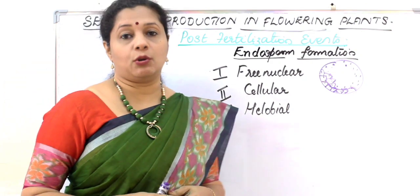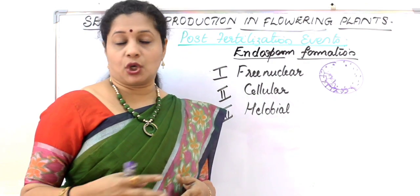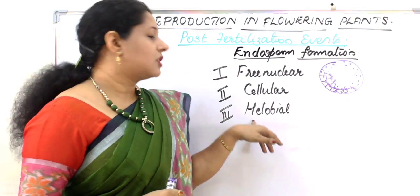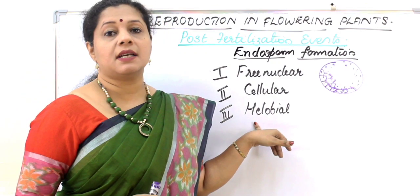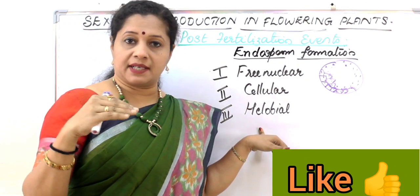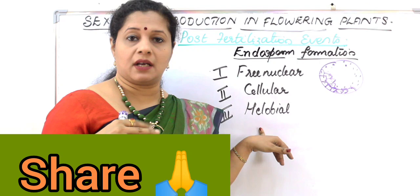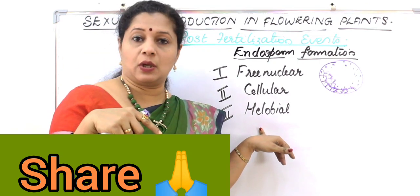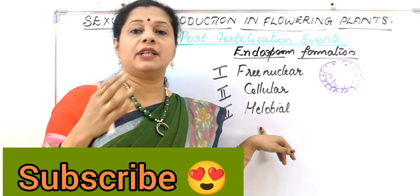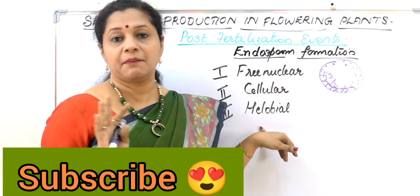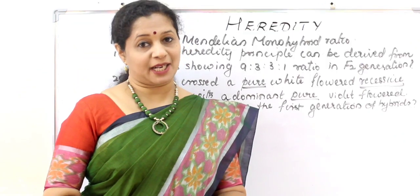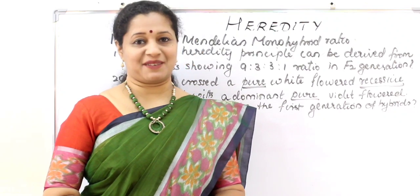The third type is called helobial, very common in monocots — for example, Vallisneria, which we learned about in hydrophily. In helobial type, the cell first divides into two unequal cells with cytoplasmic division. After that first cellular division, only free nuclear division happens; cells form only towards the end, making it cellular finally. These are the three types of endosperm development. Please like, share, and subscribe to my channel, Biology My Passion. Thank you for watching.